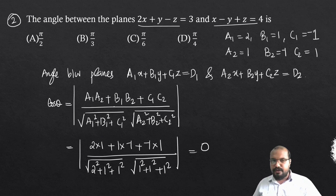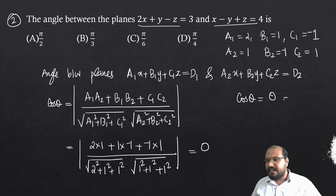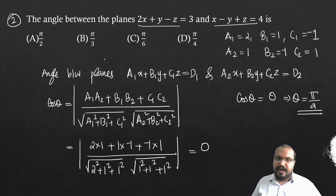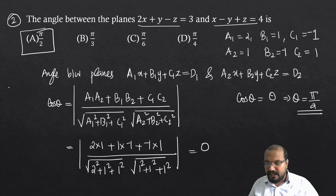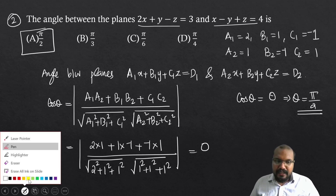Because the numerator is 0, cos theta equals 0, which means theta equals 90 degrees. The planes are perpendicular.